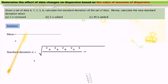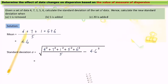Now we learn to determine the effect of data changes on dispersion based on the value of the measure of dispersion. Given a set of data: 4, 7, 1, 5, 6, calculate the standard deviation. First we find the mean: 4 plus 7 plus 1 plus 5 plus 6 divided by 5 equals 4.6. Standard deviation equals the square root of (4² + 7² + 1² + 5² + 6²) divided by 5, minus 4.6². The answer is 2.059.